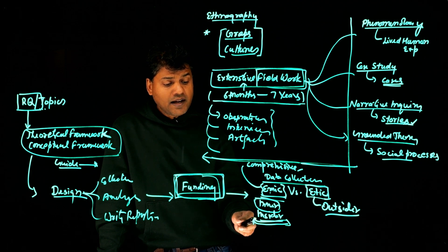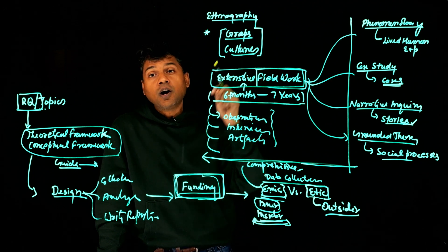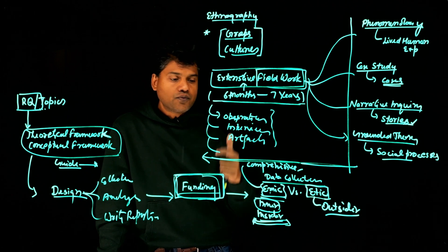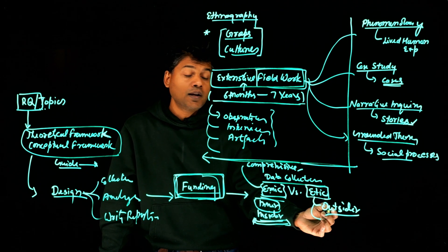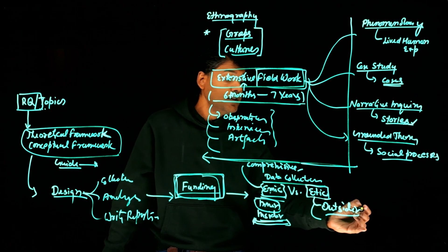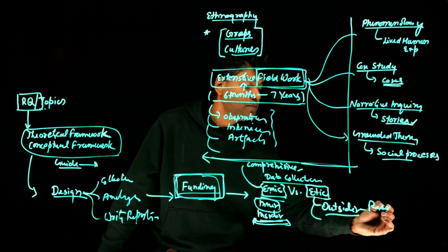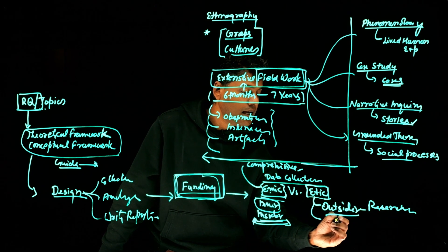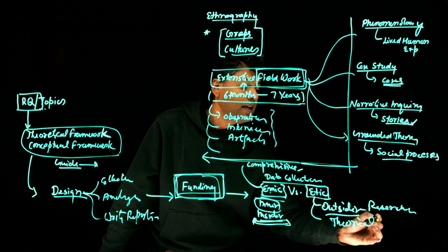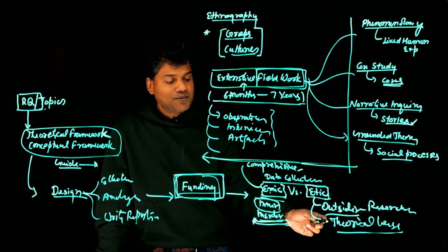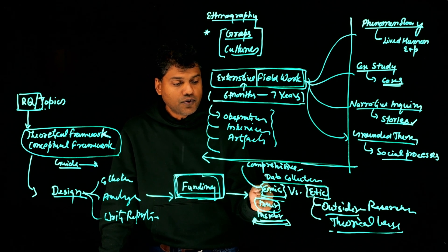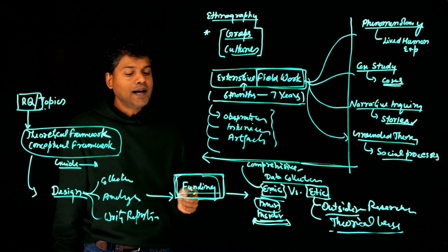This heavy focus on EMIC perspective is what makes ethnography distinct. You are spending a lot of time doing fieldwork, collecting thousands of pages of data focused on the insider perspective. Although you also have the outsider perspective — such as the researcher's own perspective and theoretical lens — the focus is more on EMIC rather than ETIC.